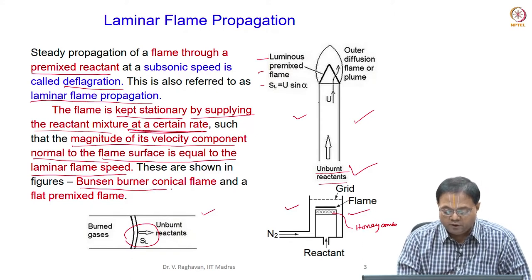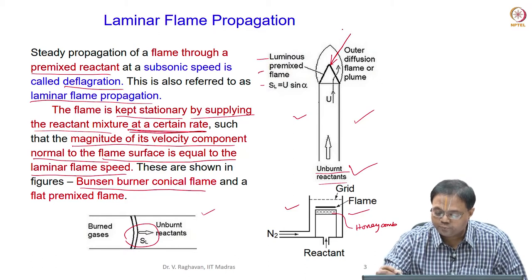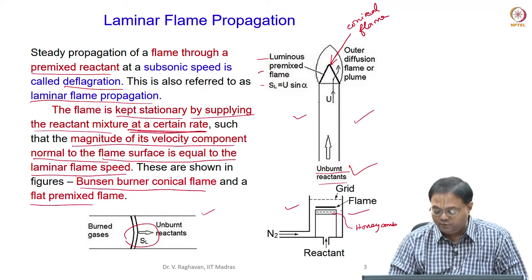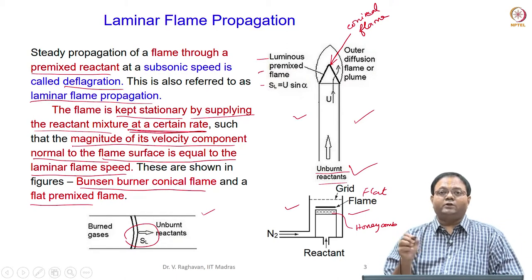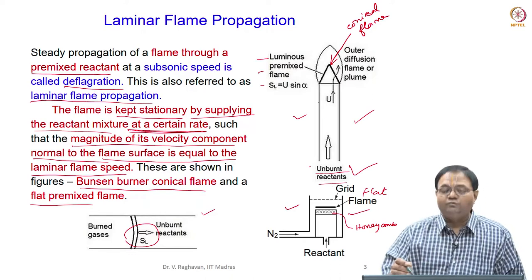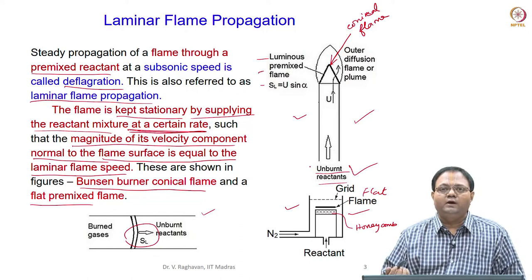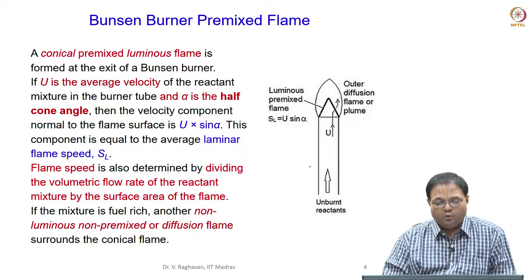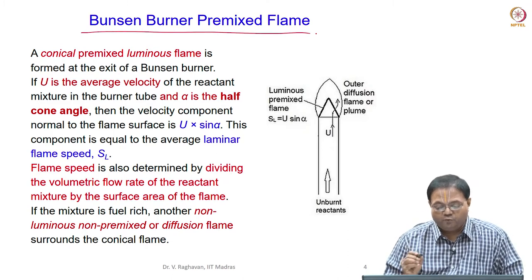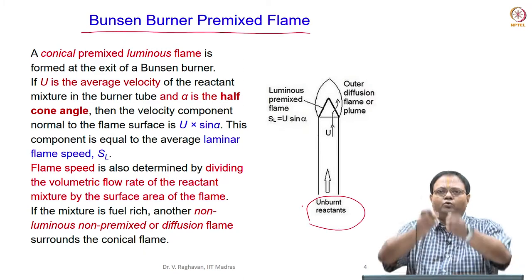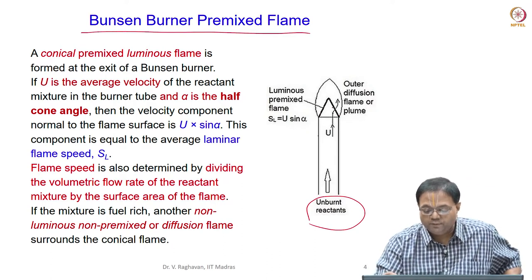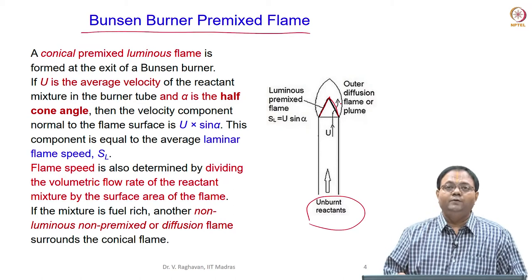The Bunsen burner forms a conical flame and a flat flame burner forms a flat premixed flame — these are examples where the flame is kept stationary over the burner port. In the Bunsen burner, the reactant mixture is supplied through a vertically oriented tube and at the exit of the burner we see a conical flame formed at the end of the burner port, based upon the equivalence ratio.